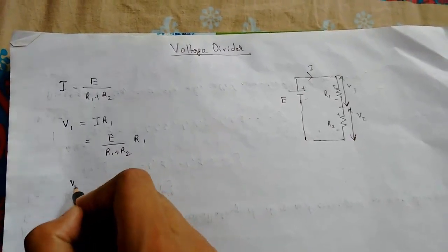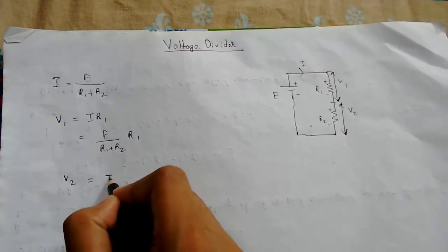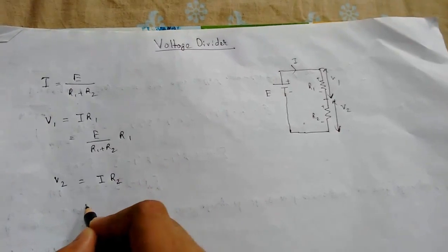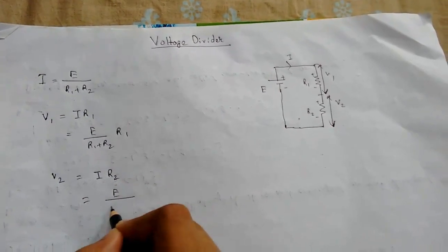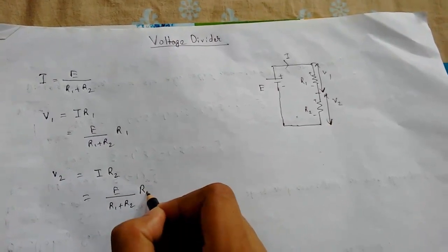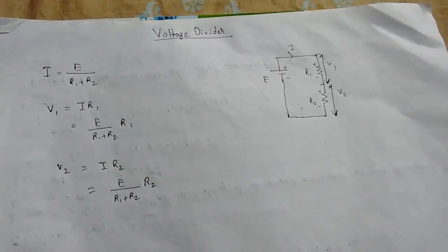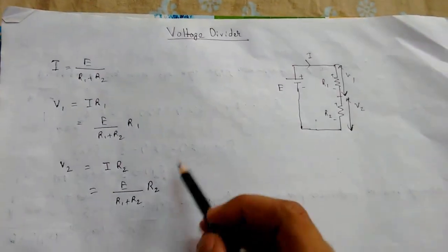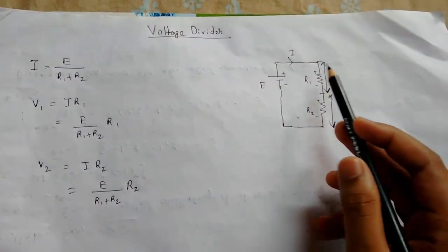So this is the voltage that will pass through R1. Now V2, this will be I times R2. It will be E upon R1 plus R2 times R2. So to calculate voltage from any of the resistances.